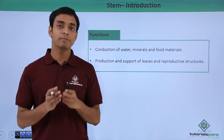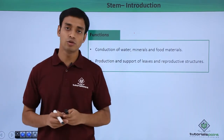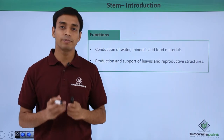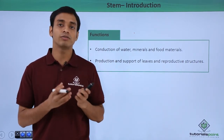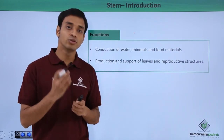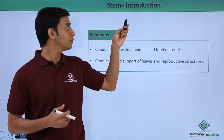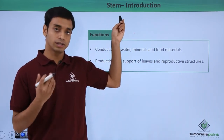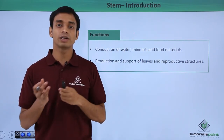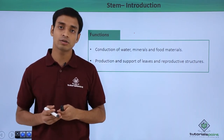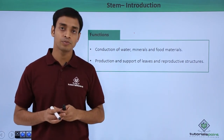The primary function of the stem is the conduction of water, minerals, and food materials. Water and minerals absorbed by the roots are conducted to the leaves — the kitchen of the plant — where food is synthesized. The stem conducts these from roots to leaves, and also transports the food made in the leaves to different parts and cells of the plant.